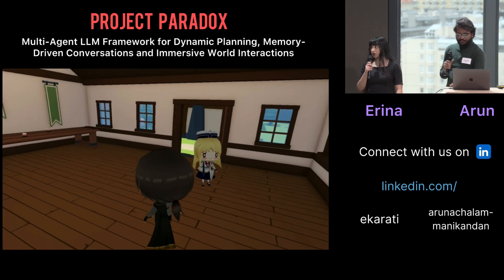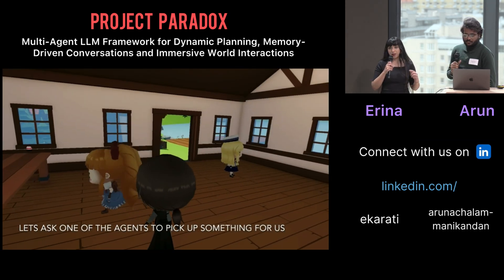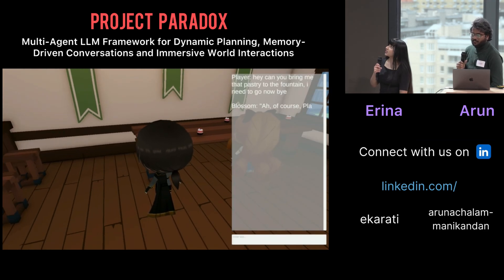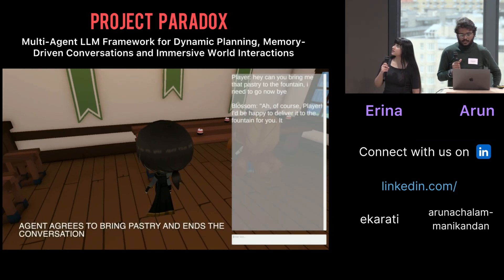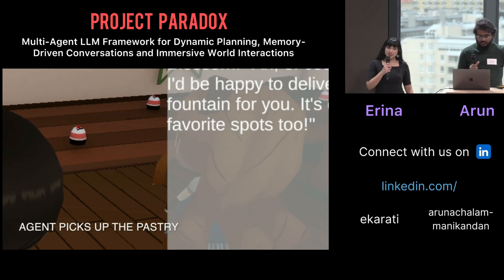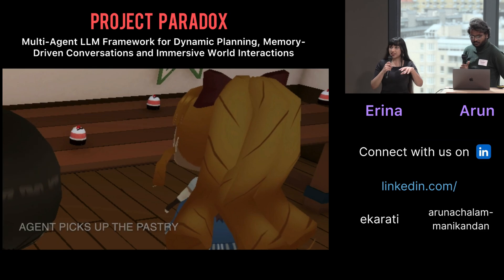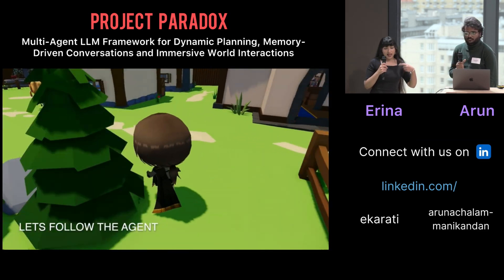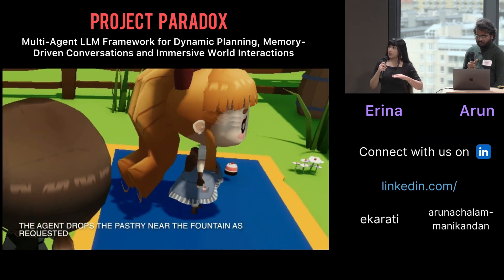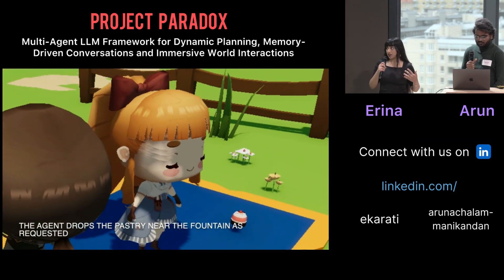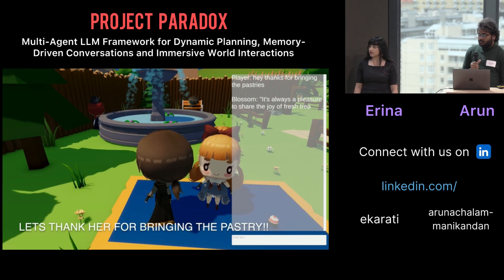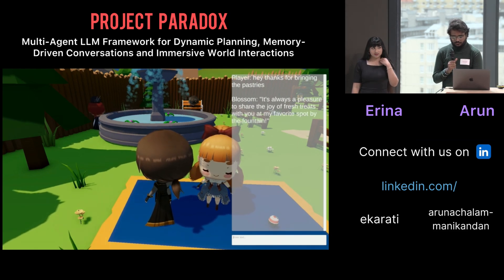In this example, we'll ask one of our agents, Blossom, out on a picnic, and ask her to bring some food with her as well. She responds: 'Of course, player. I'd be happy to deliver it to the fountain for you. It's one of my favorite spots, too.' You'll see she picks up the pastry right here and takes it to the picnic area. She plans the sequence of actions on the fly, and she'll always respond within context if you try to talk to her in between: 'It's always a pleasure to share the joy of fresh treats with you at my favorite spot by the fountain.'